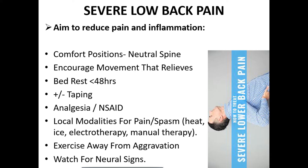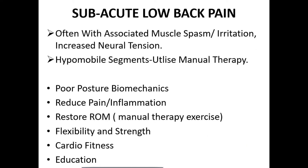Watch for neural signs. For sub-acute low back pain, often associated with muscle spasm, increased neural tension, and hypomobile segments. Utilize manual therapy to address poor posture and biomechanics, reduce pain and inflammation, restore range of motion. Include exercise for flexibility, strength, cardio fitness, and education.